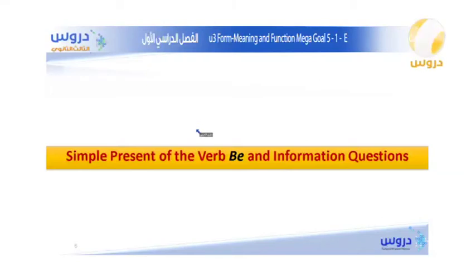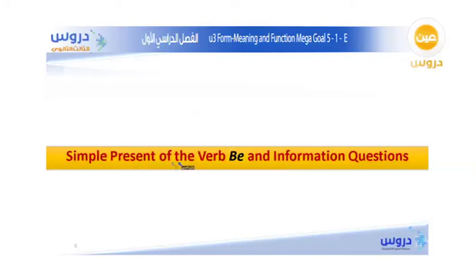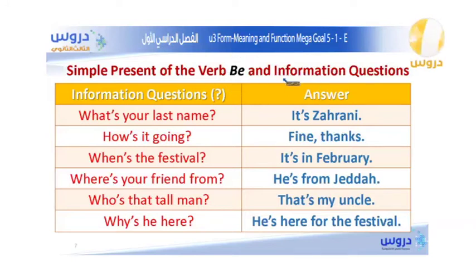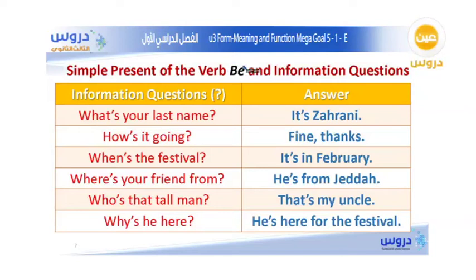Now we're moving to the other part of today's lesson, which is the simple present of the verb to be and information questions. The verb to be means either is, am, or are — three forms.